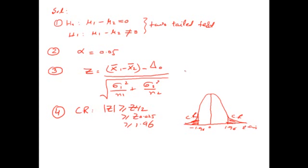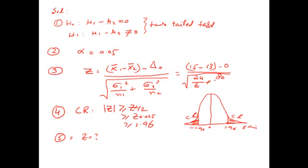In the fourth step we define the critical region, which depends on the alternative hypothesis — this is a two-tail test, so z alpha by 2 equals 0.025, giving a table value of 1.96. Both tails have critical regions at plus and minus 1.96. In the fifth step, substituting values: mean1 is 15, mean2 is 13, delta-naught is 0, sigma1-squared is 24, n1 is 6, sigma2-squared is 80, n2 is 8. This gives z equals 2 divided by 3.74, which equals 0.53.